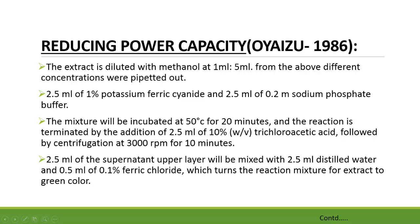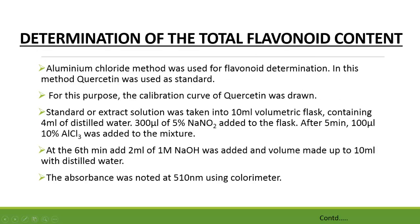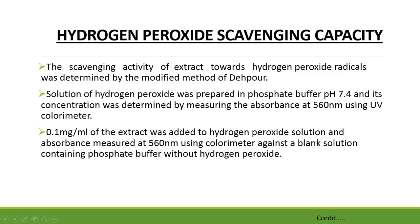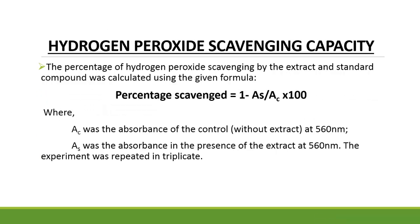The reducing power capacity is calculated by the OYSO 1986 method — it is a very simple method. The total flavonoid content was determined according to the aluminum chloride method, and calculated using the same formula as the total phenol content. Hydrogen peroxide scavenging capacity was also determined. The formula for percentage of H2O2 scavenging is: % scavenging = (1 - As/Ac) × 100.